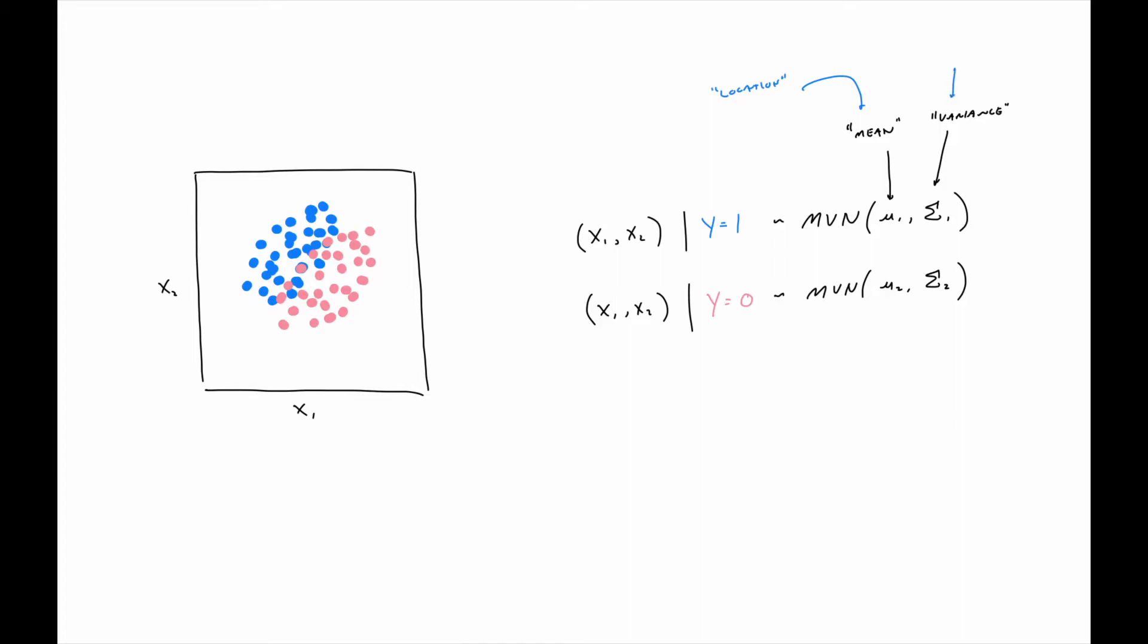But ultimately, multivariate normal has two parameters, the mean and the variance. But the way I would suggest you think about those, the mean is the location. So it's the center of the blob, but it dictates where the blob is, in this case, two-dimensional space. And then the variance is going to be the shape.